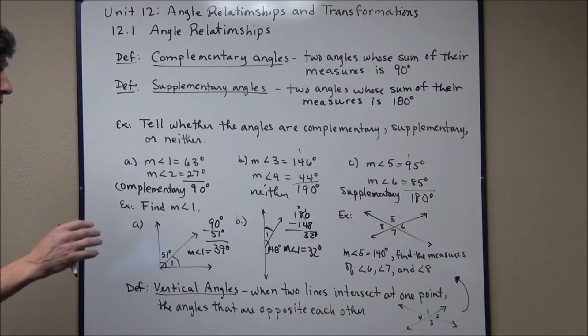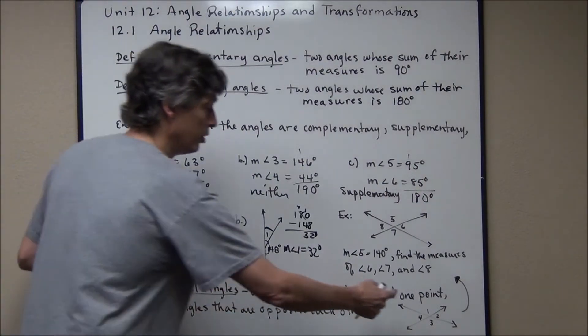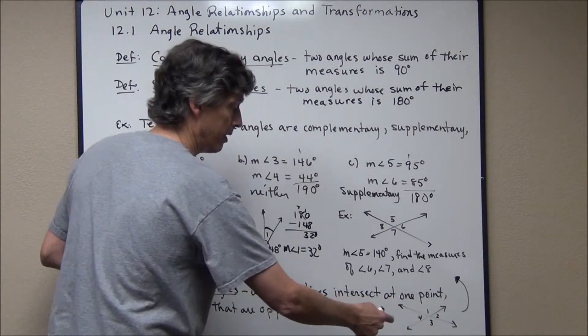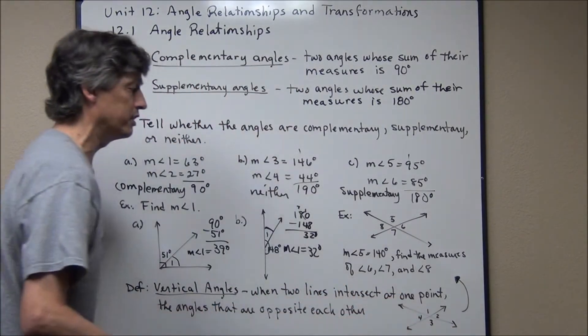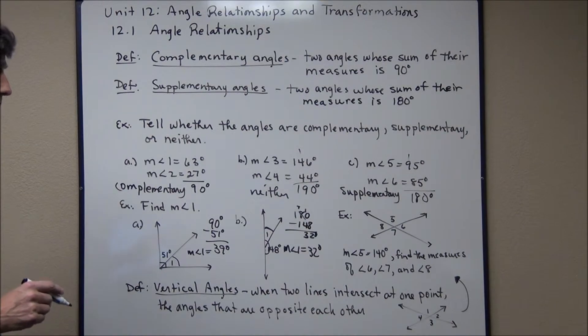And the really cool thing about vertical angles is they're congruent. Angle two and angle four have the same measure. Angle one and angle three have the same measure. That's a really important one because you see that all the time in geometry.